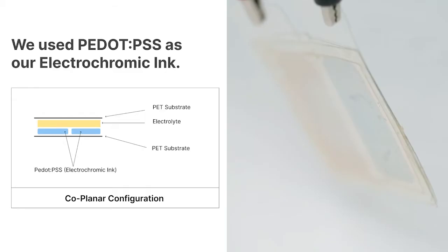Electrochromic ink is a specialized formulation that changes color on the visible spectrum when voltage is applied across it. We used PEDOT:PSS as an electrochromic ink. All our prototypes have been arranged in the coplanar arrangement, meaning there are two traces of PEDOT:PSS on the same PET substrate with an electrolyte acting as a bridge between the PEDOT:PSS traces.